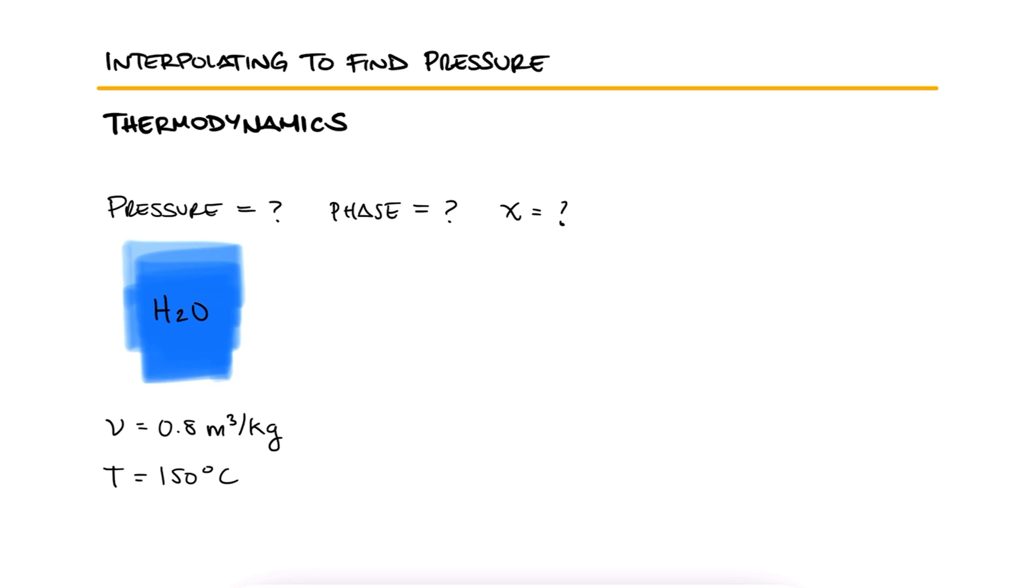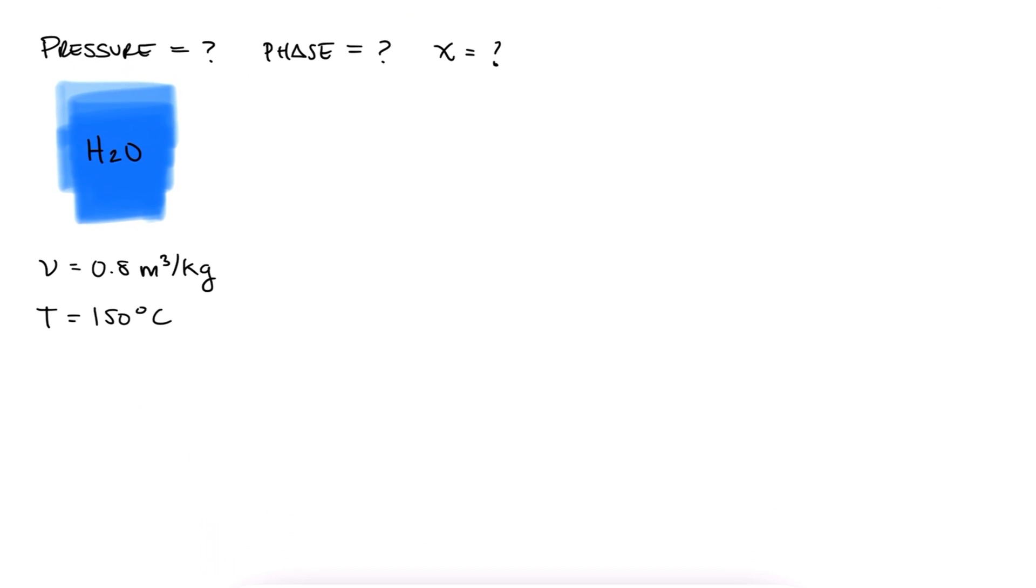Just like in most of the other examples, we start by going to the saturated mixture tables to determine the phase of our substance, in this case the saturated mixture table by temperature.